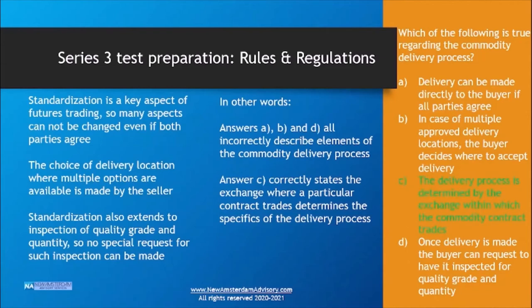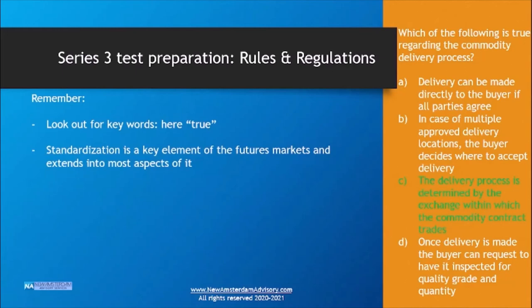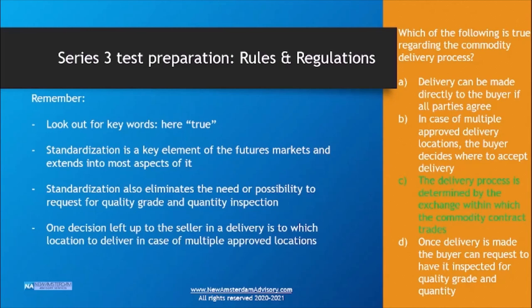Answer C is correct — the delivery process is determined by the exchange within which the commodity contract trades. Answers A, B, and D all incorrectly describe elements of the commodity delivery process. Key takeaways: standardization is a key element in futures markets and extends to most aspects including the delivery process, which eliminates the need for special inspection requests for quality, grade, and quantity. The one decision left to the seller is which location to deliver to when multiple approved locations exist.